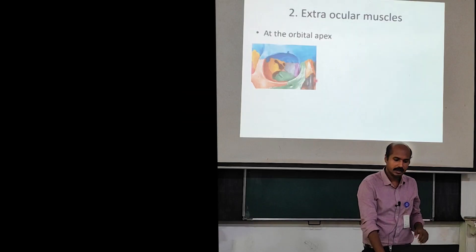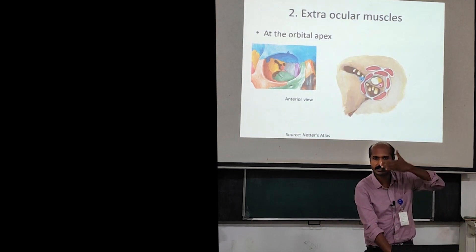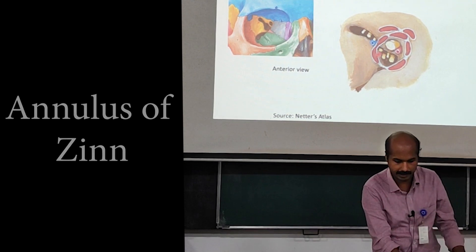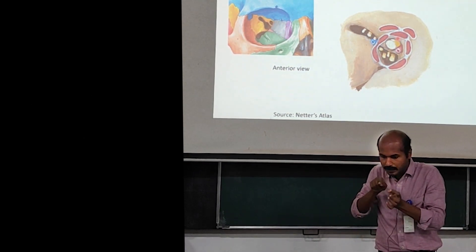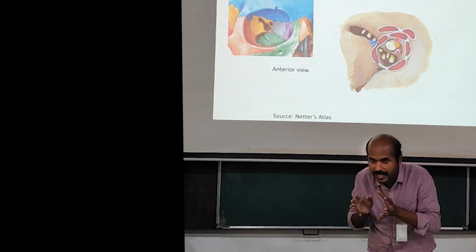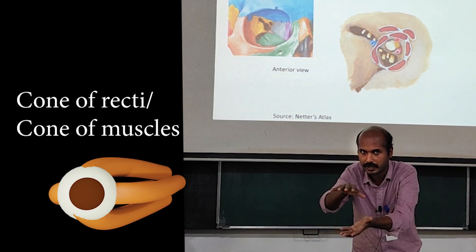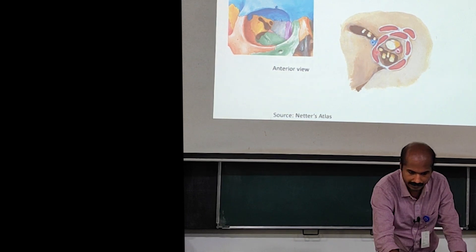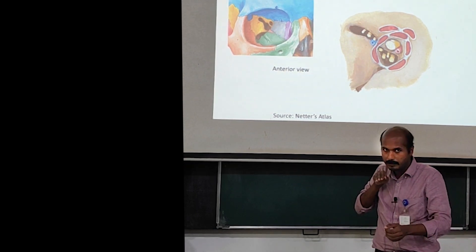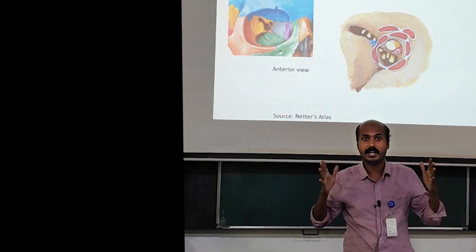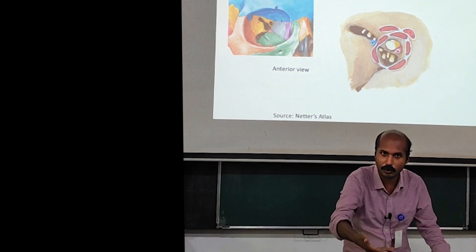Next, we look at two coronal sections. This more posterior coronal section shows the annulus of Zinn — a common tendinous ring — from where all the muscles arise. You can see the superior rectus, medial rectus, lateral rectus, and inferior rectus all huddled together posteriorly — this is called the cone of recti. Above the superior rectus is the origin of the levator palpebrae superioris, and just medial to that is the superior oblique. The inferior oblique is not visible here because it does not arise from the apex but from the floor anteriorly.